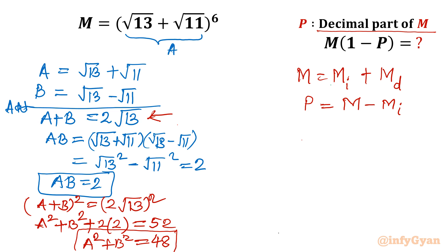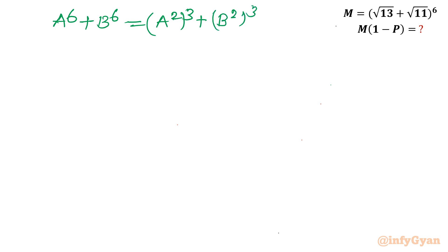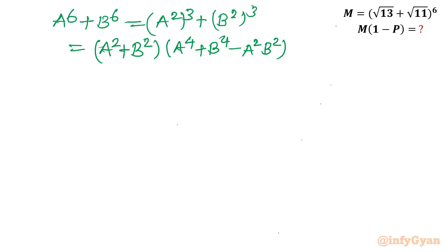Now let us calculate a⁶ plus b⁶. I am targeting the nature of a⁶ plus b⁶, and then the nature of b⁶ individually. I write a⁶ plus b⁶ as (a²)³ plus (b²)³ and apply the identity for a cube plus b cube: (a² plus b²) times (a⁴ plus b⁴ minus a²b²). We already know a² plus b² equals 48.